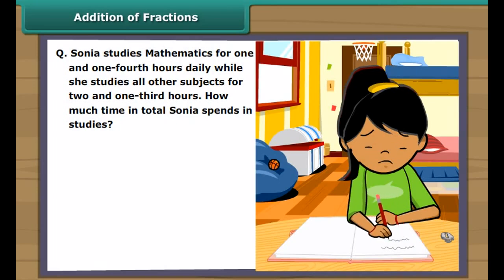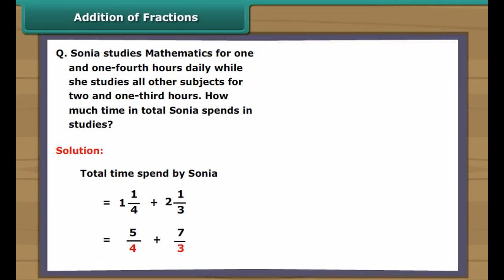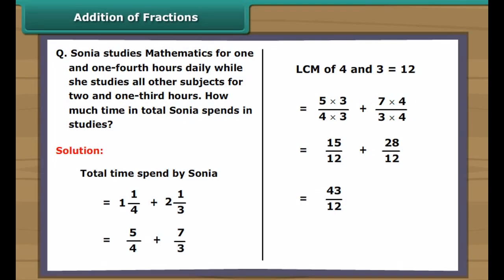Sonia studies mathematics for one and one-fourth hours daily, while she studies all other subjects for two and one-third hours. How much time in total does Sonia spend in studies? Total time is equal to one and one-fourth plus two and one-third hours, which equals five-fourths plus seven-thirds. Since the denominators are not the same, we take the LCM of 4 and 3, which is 12. This gives fifteen-twelfths plus twenty-eight-twelfths, which equals forty-three-twelfths. Simplifying, we get three and seven-twelfths.